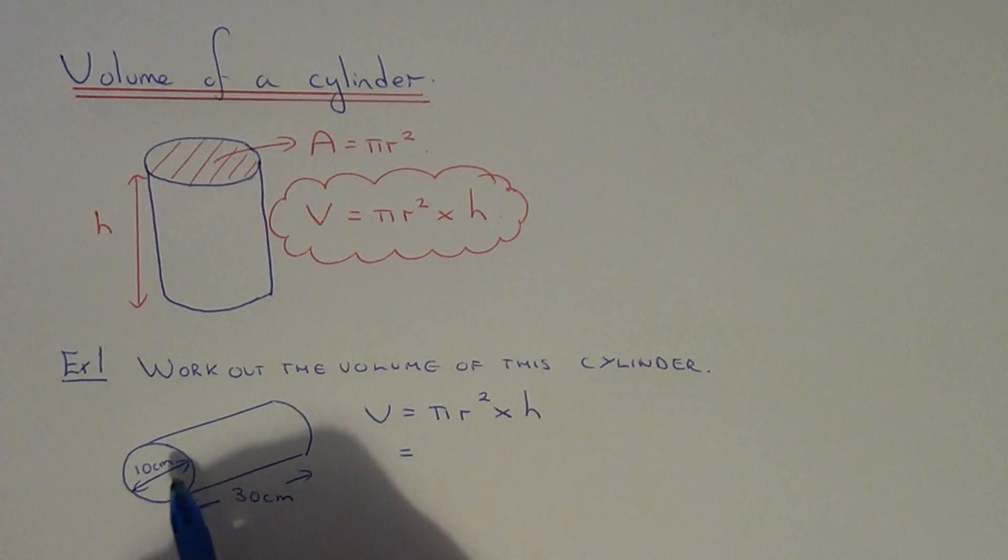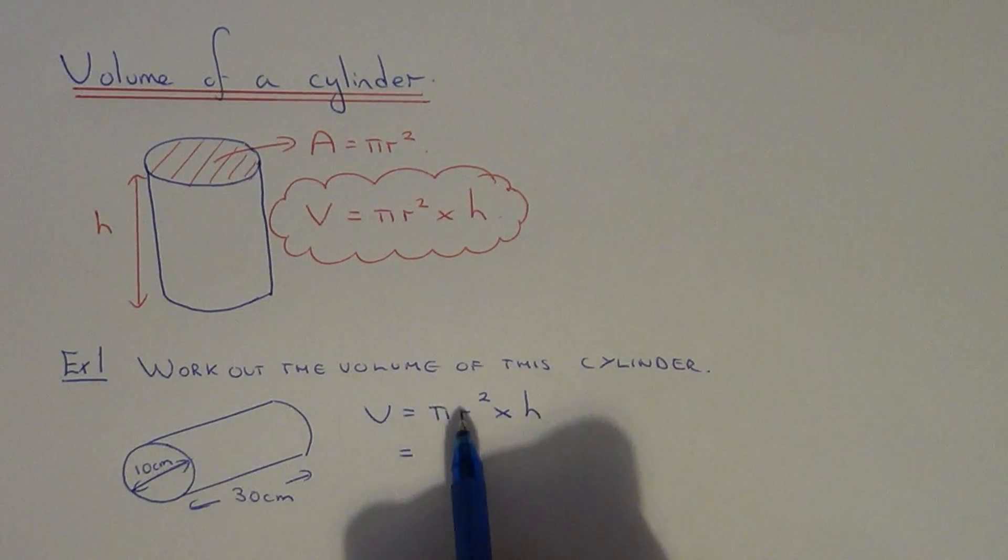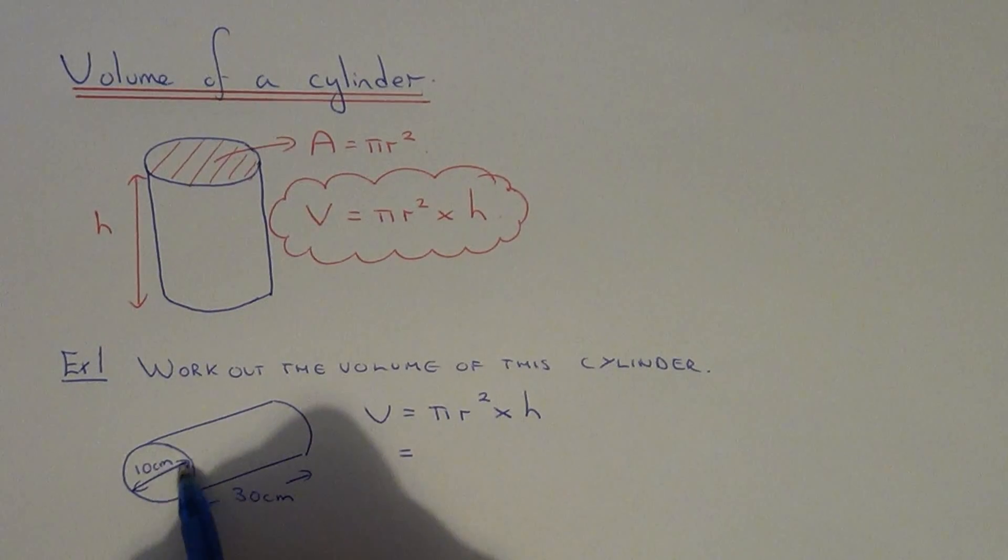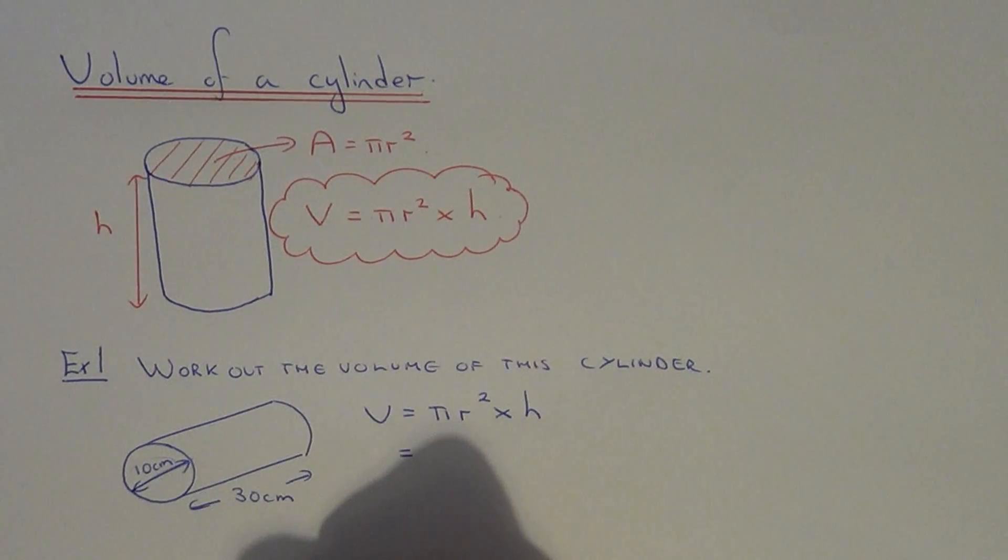So we just have to be careful on this example because this is the diameter of the cylinder. It's all the way across. We only want the radius. So the radius is halfway across. So if we half 10, that will give us a radius of 5.